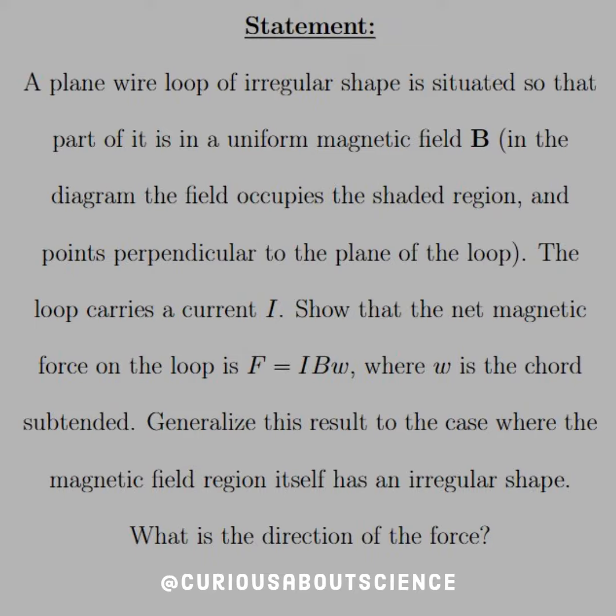This one reads: a plane wire loop of irregular shape is situated so that part of it is in a uniform magnetic field B. In the diagram, the field occupies the shaded region and points perpendicular to the plane of the loop. The loop carries a current I.